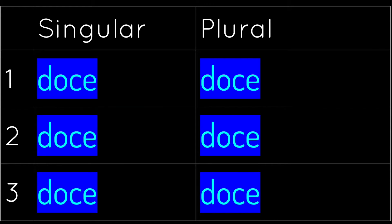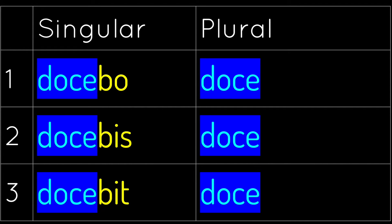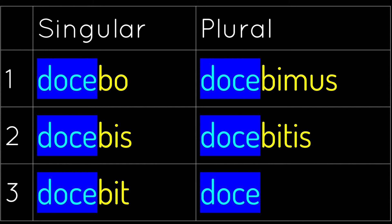We're going to write the present stem in all six boxes, and then add the endings: bo, bis, bit, bimos, bitis, bunt — and we're done.